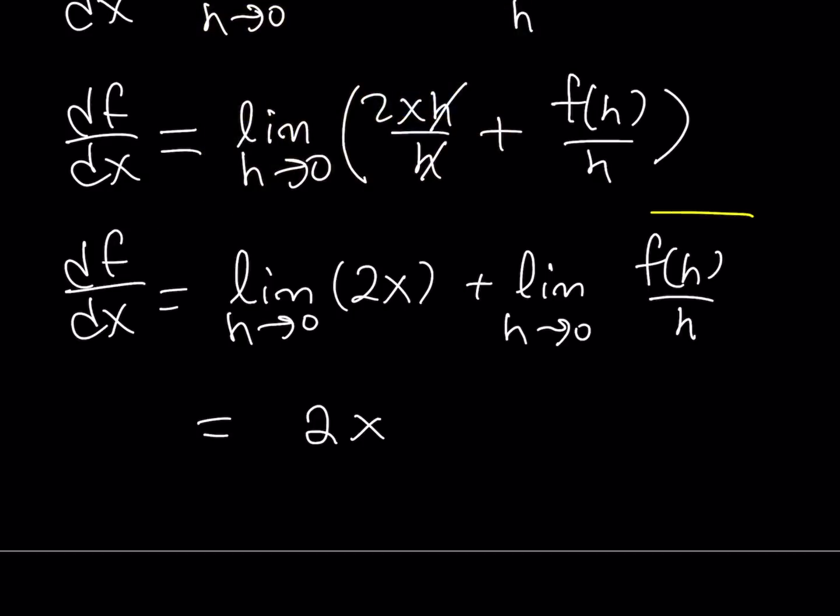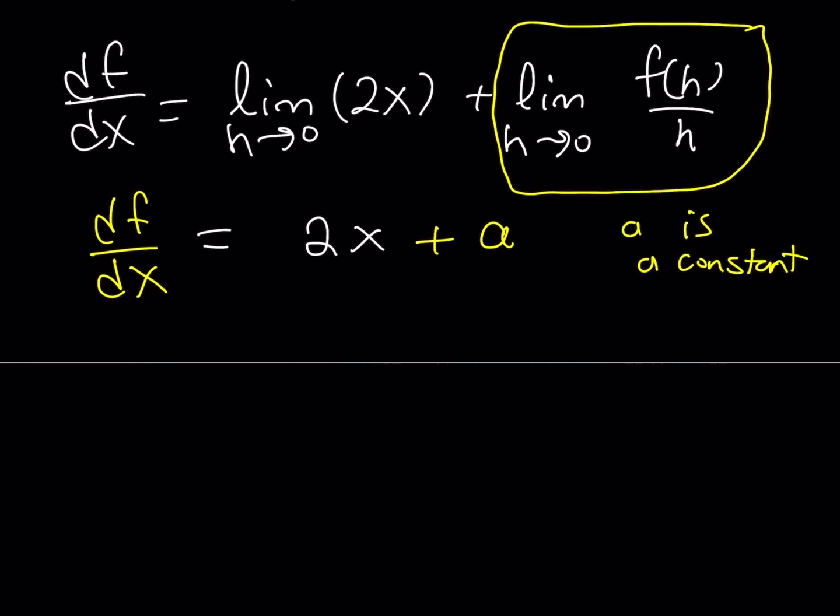And this here, this expression right here, is actually a constant, right? So, I can basically write it as a constant because as h approaches 0, since this limit exists, the result is just going to be a constant. So, let's go ahead and write it as a, where a is a constant. Hopefully, you see what I'm getting at from here. But df over dx, which is the derivative, can be written like this.